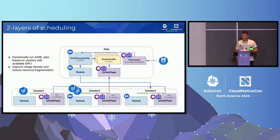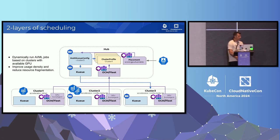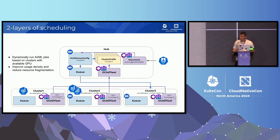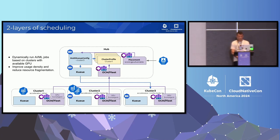The placement prioritizer works with Kueue, works with multi-Kueue, to help you dynamically run your AI/ML jobs based on clusters with the available GPU. We can improve the density of job scheduling across your provider, across your on-premise or cloud estate. This is obviously an open hybrid cloud world that we live in. And we can reduce the fragmentation of your workload across your fleet.